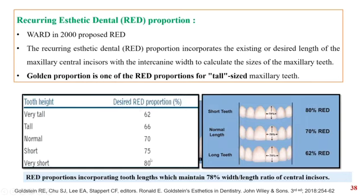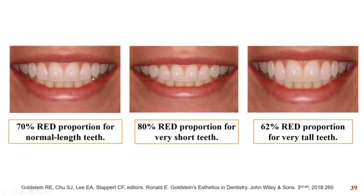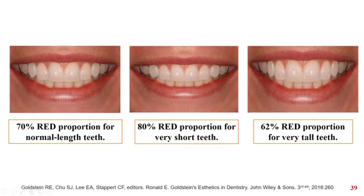The recurrent aesthetic dental proportion states that a uniform width-to-length ratio should be maintained when moving from the central incisor to the canine. A 75% to 78% width-to-length ratio is most preferred. The proportion varies according to the size of the teeth, from 62% to 80%: for very tall teeth it is kept at 62%, tall teeth at 66%, normal teeth at 70%, short teeth at 75%, and very short teeth at 80%. The recurrent aesthetic proportion for very tall teeth equals the golden proportion at 62%. Examples shown include normal length teeth at 70% RAD proportion, very short teeth at 80%, and very tall teeth at 62%.